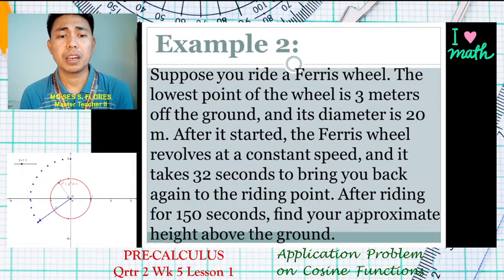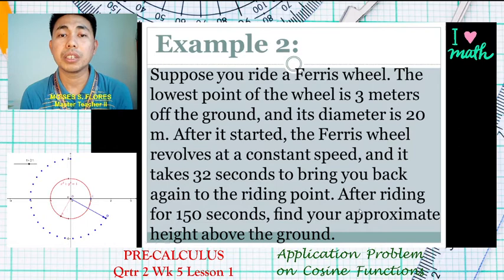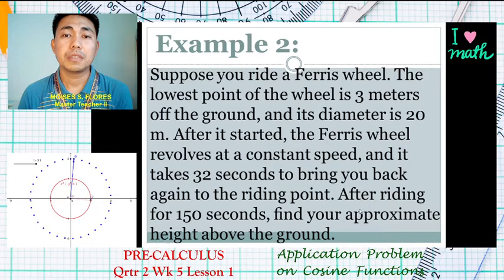In the second example, you ride a ferris wheel. The lowest point of the wheel is three meters off the ground, and its diameter is 20 meters. After it starts, the ferris wheel revolves at a constant speed and it takes 32 seconds to bring you back to the riding point. After riding for 150 seconds, you are asked for the approximate height above the ground.